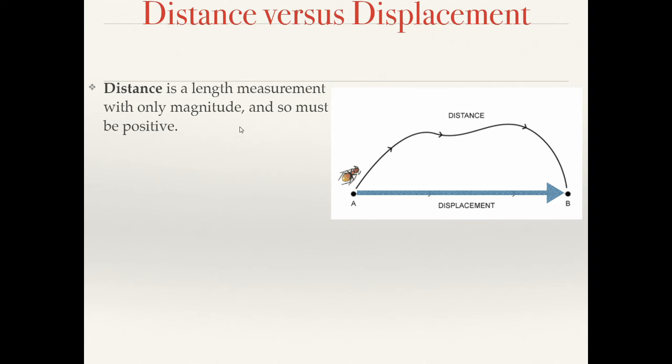Distance, I will define here, is the length of a measurement with only magnitude, and so it must be positive. And it does not have an arrow associated with it. It has a path length associated with it. The entire path, let's say this ant here, travels this particular path to get from point A to point B. Its distance would be the length of that entire curvy path. It's always positive. I never say I walked negative 1 miles today, or I jumped negative 15 feet.